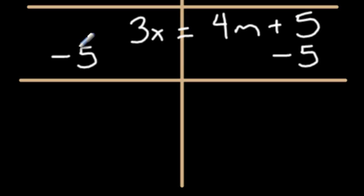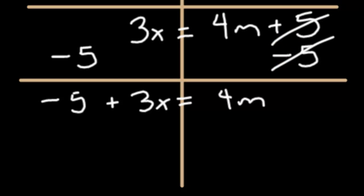Negative 5, 5, we didn't touch it, can't do anything with it. That just drops straight down. This 3x also drops straight down. Since this 3x was positive, there has to be a symbol in between these two terms, so we're going to put a plus right there. 4m we didn't touch, that drops straight down. And the 5 and the negative 5, those cancel out.